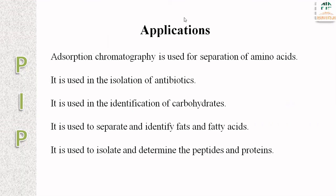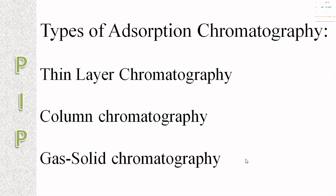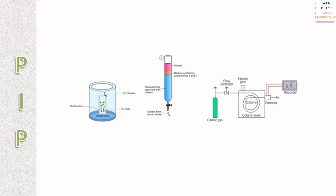Applications of adsorption chromatography: it is used in the isolation of antibiotics, identification of carbohydrates, separation and identification of fats and fatty acids, and isolation and determination of peptides and proteins. Three types of adsorption chromatography are thin layer chromatography (TLC), column chromatography, and gas-solid chromatography. Thank you.